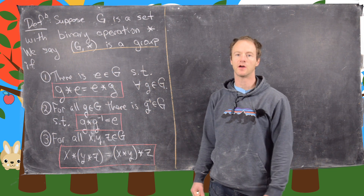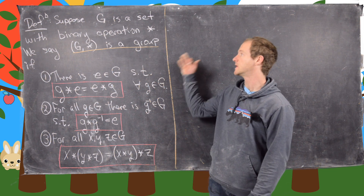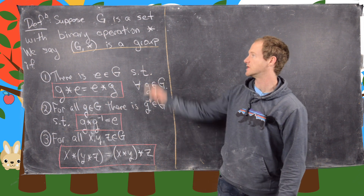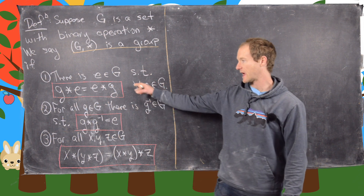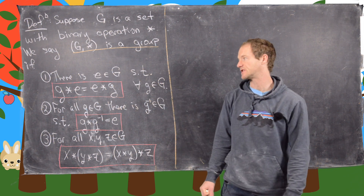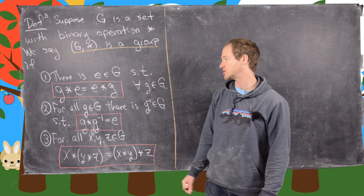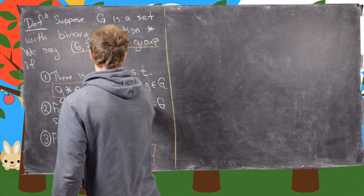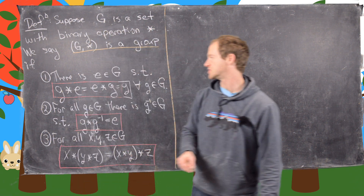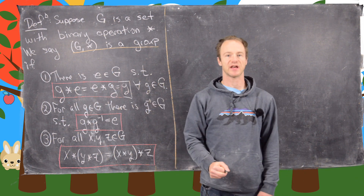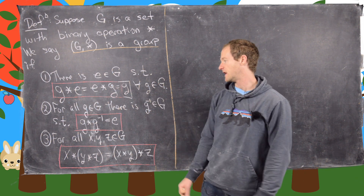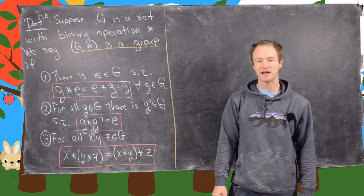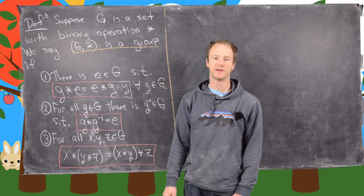Let's recall from a previous video: we defined the notion of a group. It is a set together with a binary operation, G and star, where we have an identity — a special element e such that g star e equals e star g equals g for all g in G. So it does not change the element it's acting on. Everything has an inverse, so g times g-inverse is the identity. And we have associativity with the operation.